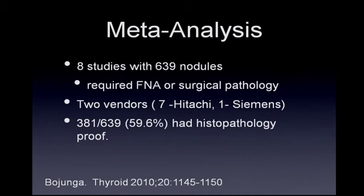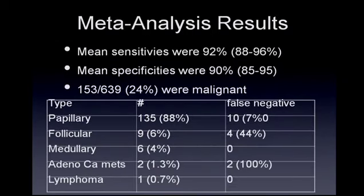Bojunga performed a meta-analysis on eight studies in the literature involving 639 nodules, all requiring either FNA or surgical pathology, using two vendors—mostly the Hitachi system and one Siemens system. Of these, 381 of the 639 (about 60%) had histopathological proof of diagnosis. The mean sensitivities between studies ranged from 88% to 96% with an average of 92%. 153 of the 639 nodules (24%) were malignant, with papillary cancers accounting for 88% and a false negative rate of 7%.